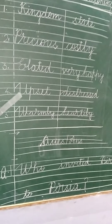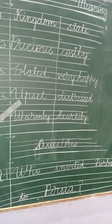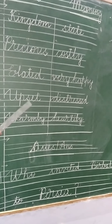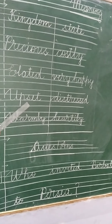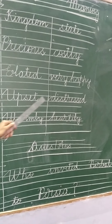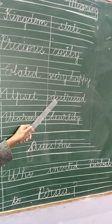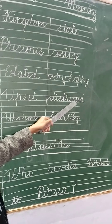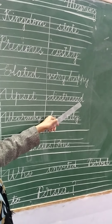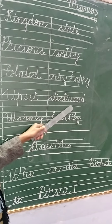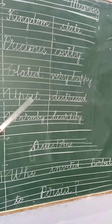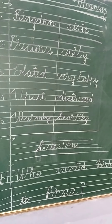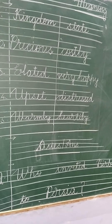Number 4: upset — U-P-S-E-T. Upset. The meaning of upset is distressed — means sad. Sometimes you feel upset.